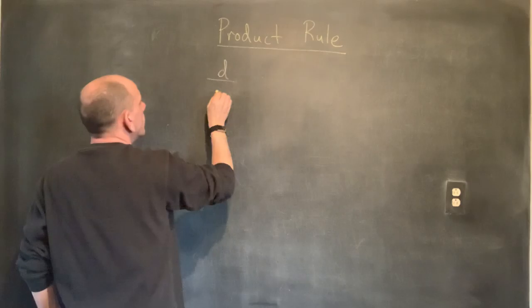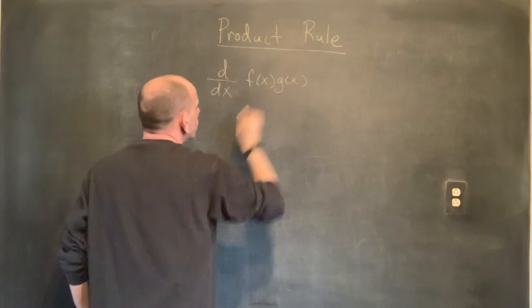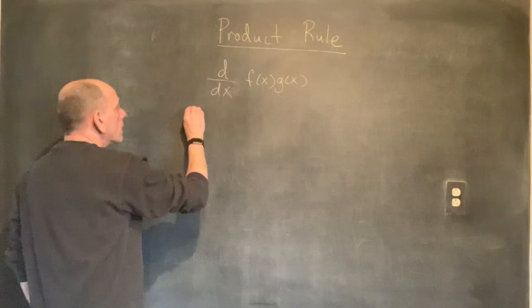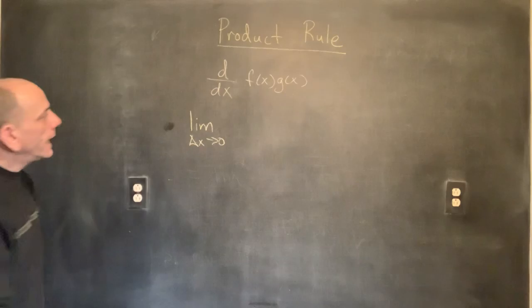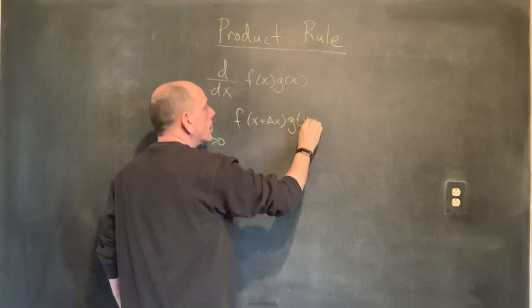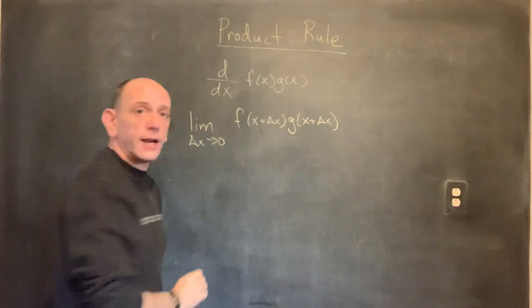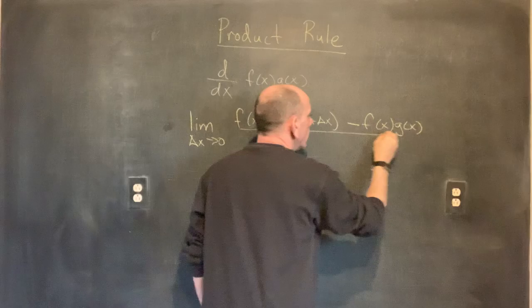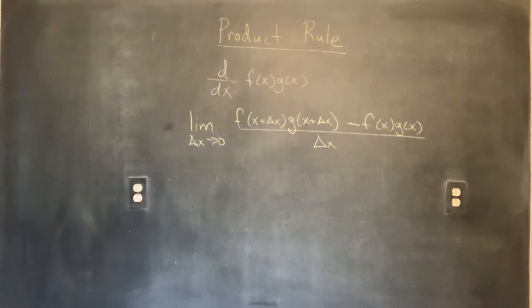What we're trying to look at is: what is the derivative of f(x) times g(x)? We go back to our limit definition of the derivative, and we say the limit as delta x goes to zero. I need my function evaluated at x plus delta x, so f at (x + Δx) times g at (x + Δx), that's f·g evaluated at (x + Δx), minus the original function f(x)·g(x), all over delta x.